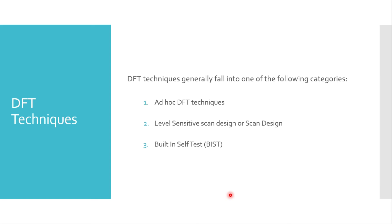Built-in self-test, or BIST, was proposed around 1980 to integrate a test pattern generator, or TPG, and an output response analyzer within the VLSI device, to perform testing internally to the IC. Because the test circuitry resides within the circuit under test, BIST can be used at all levels of testing — be it wafer level testing, package level testing, or system level testing.